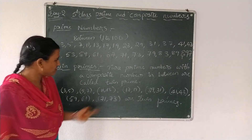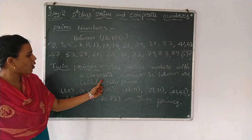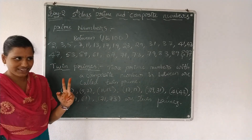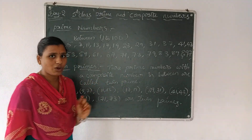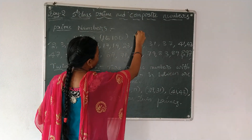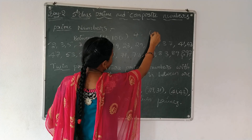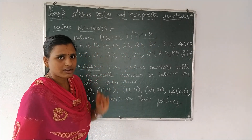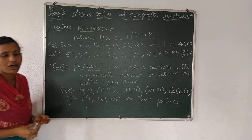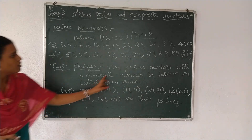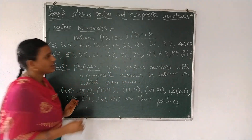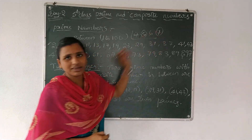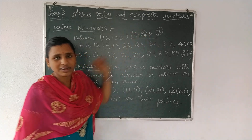Now, twin primes. Twin primes means 2 prime numbers with a composite number in between. For example, take 4 and 6. What is the prime number in between? 5. So 5 is between two composite numbers 4 and 6. And 7 is also a prime number. So 5 and 7 are two prime numbers with a composite number between them — that is a twin prime.